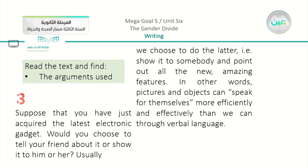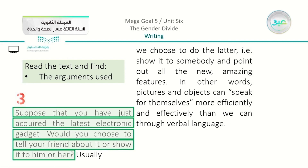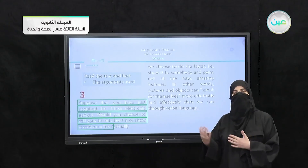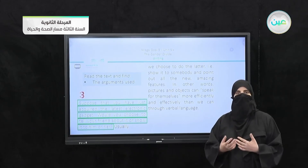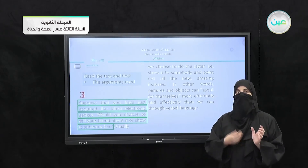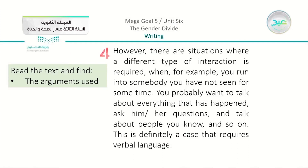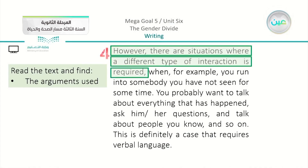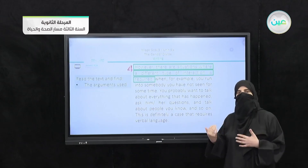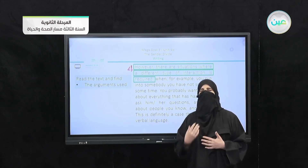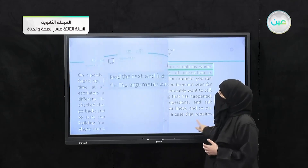In paragraph three, the argument is: suppose that you have just acquired the latest electronic gadget — would you choose to tell your friend about it or show it? This is another way to prove that showing something is better than just talking about it. When talking about a new device, it is much better to show a person rather than describe it.